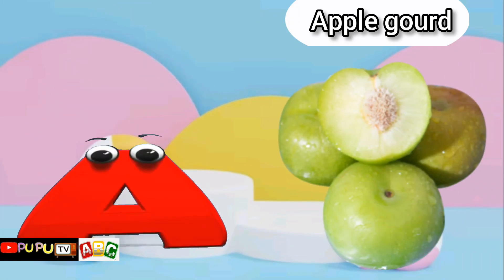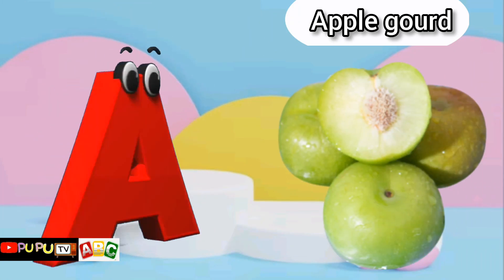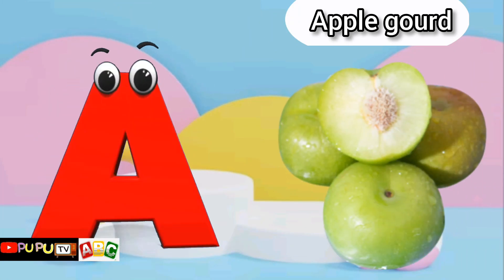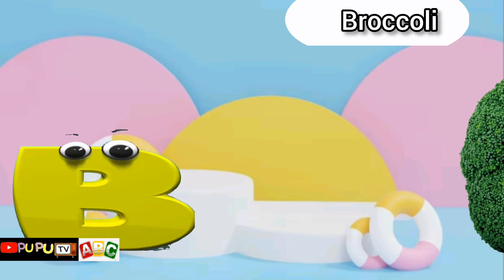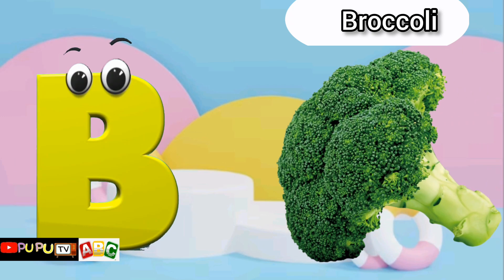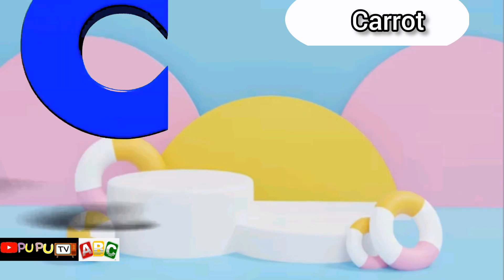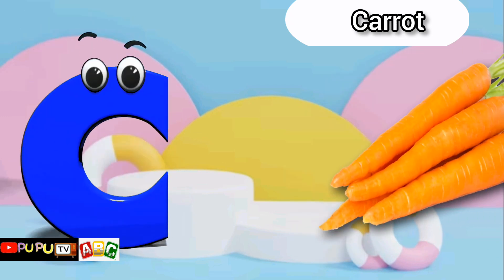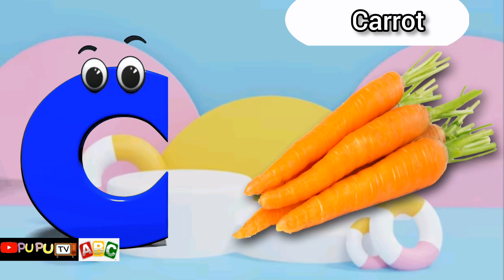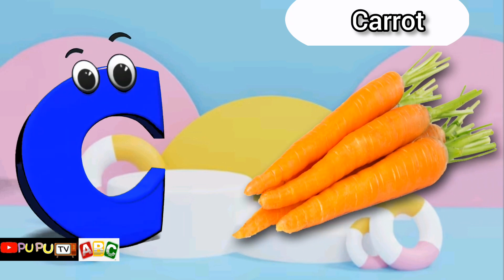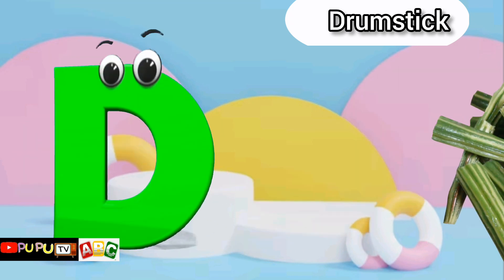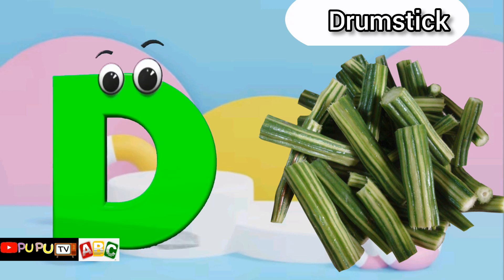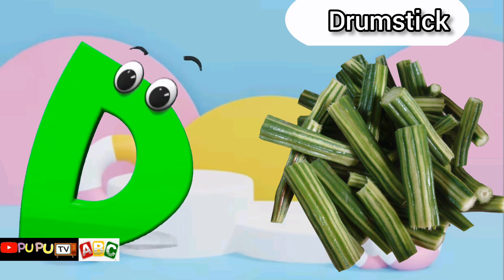A is for Apple Gourd, Apple Gourd. B is for Broccoli, Broccoli. C is for Carrot, Carrot. D is for Drumstick, Drumstick.